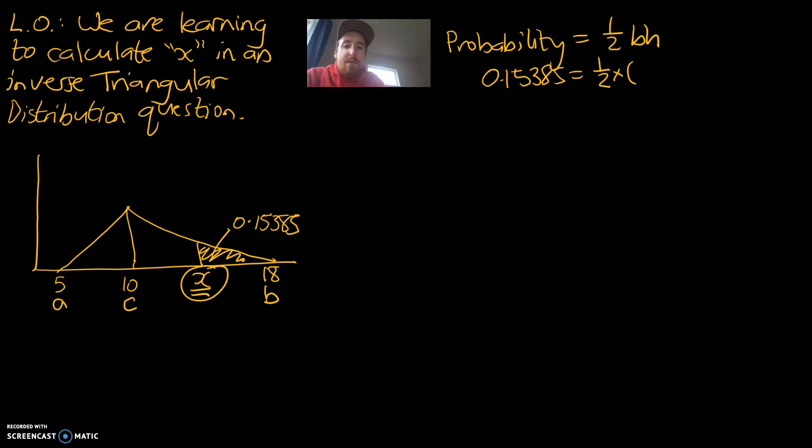The base of our triangle is the difference between 18 and x. So, we're going to go 18 minus x. And that is going to be multiplied by the height of this triangle. I just want to note, our triangle has a right slope.